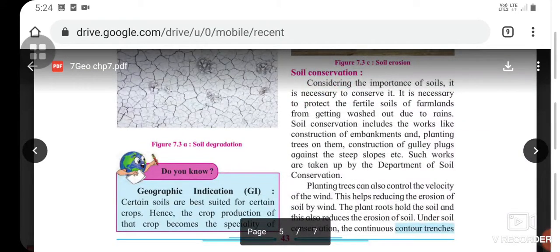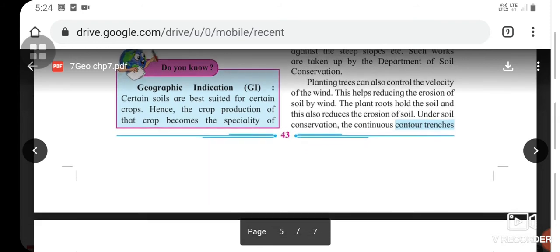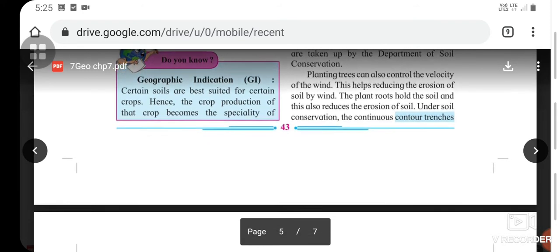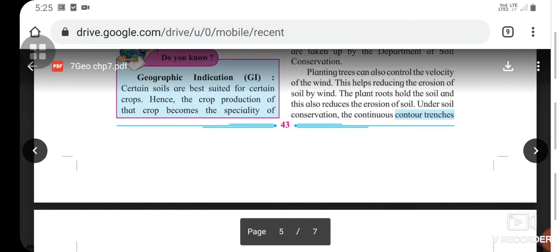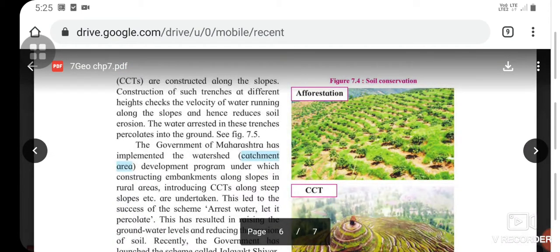Soil conservation: Considering the importance of soil, it is necessary to conserve it. It is necessary to protect the fertile soils of farmlands from getting washed out due to rains. Soil conservation includes works like construction of embankments and planting trees on them, construction of gully plugs against steep slopes, etc. Such works are taken up by the Department of Soil Conservation. Planting trees can also control the velocity of wind. This helps reduce erosion of soil by wind. The plant roots hold the soil and this also reduces soil erosion. Under soil conservation, continuous contour trenches are constructed along the slopes.